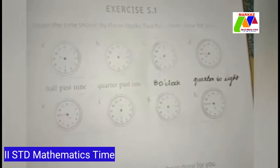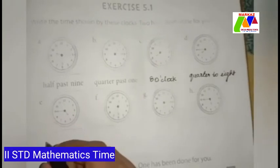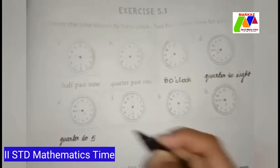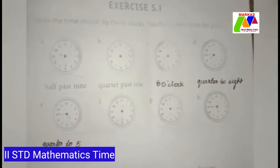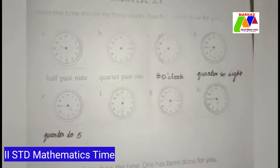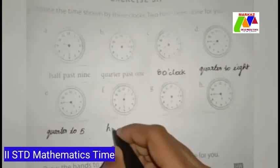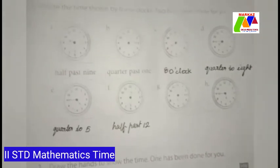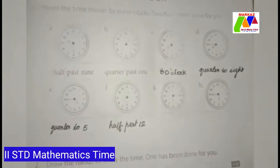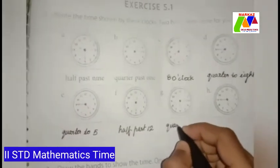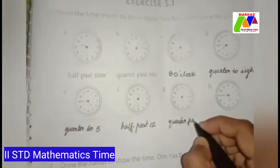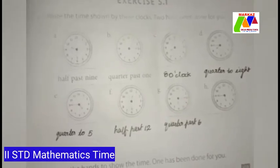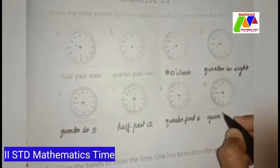The next clock shows the time quarter to 5. The following clock shows the time half past 12. Then the next clock shows the time quarter past 6. And the last clock shows the time quarter to 6.